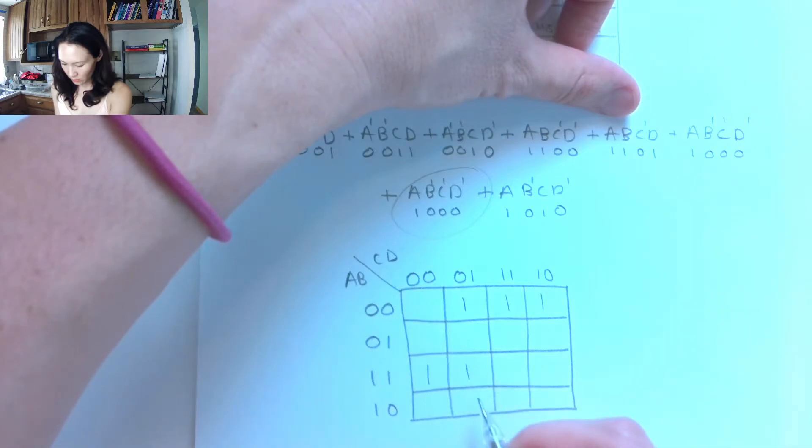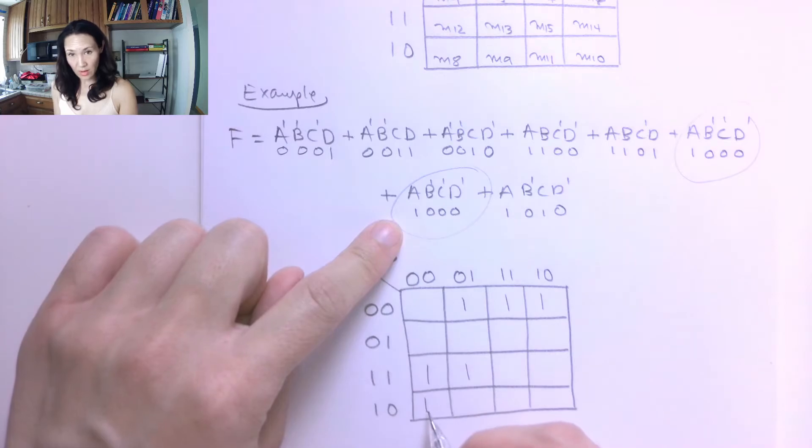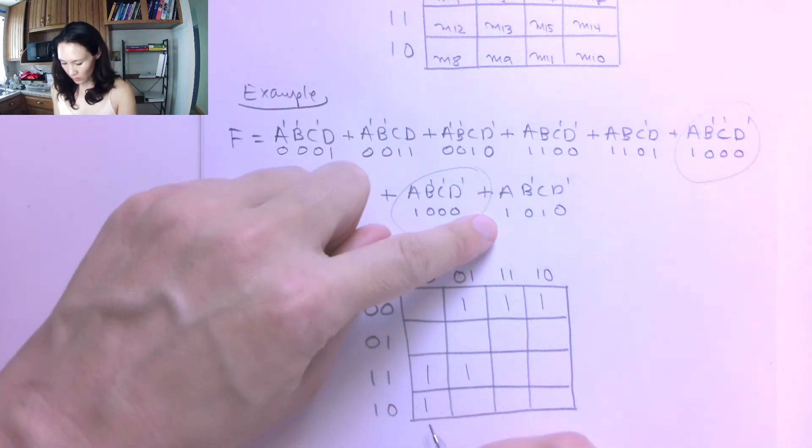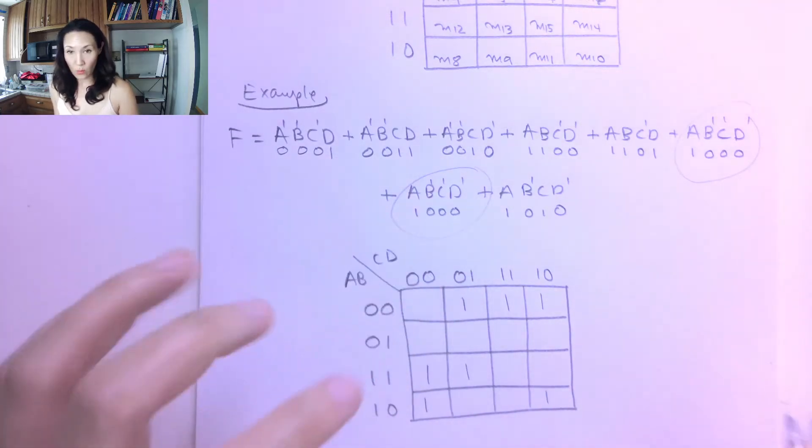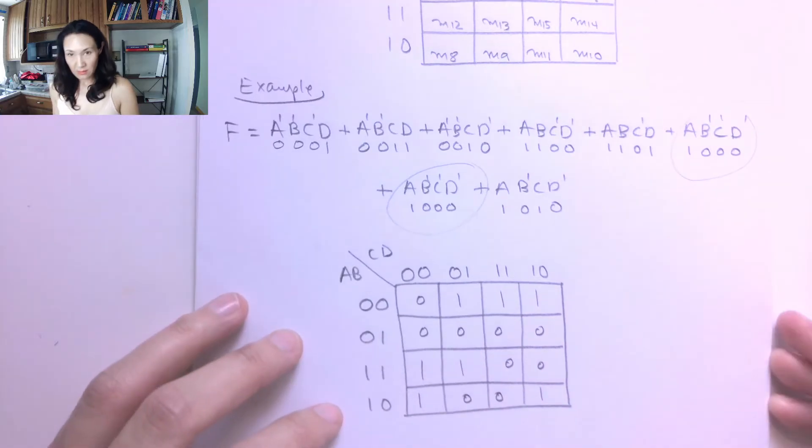1, 0, 0, 0 has a 1. 1, 0, 0, 0, there's my duplicate. I don't need to write 1 twice. And then 1, 0, 1, 0 has a 1. And everywhere else I know is going to be a 0. So I can fill in my Karnaugh map like this.